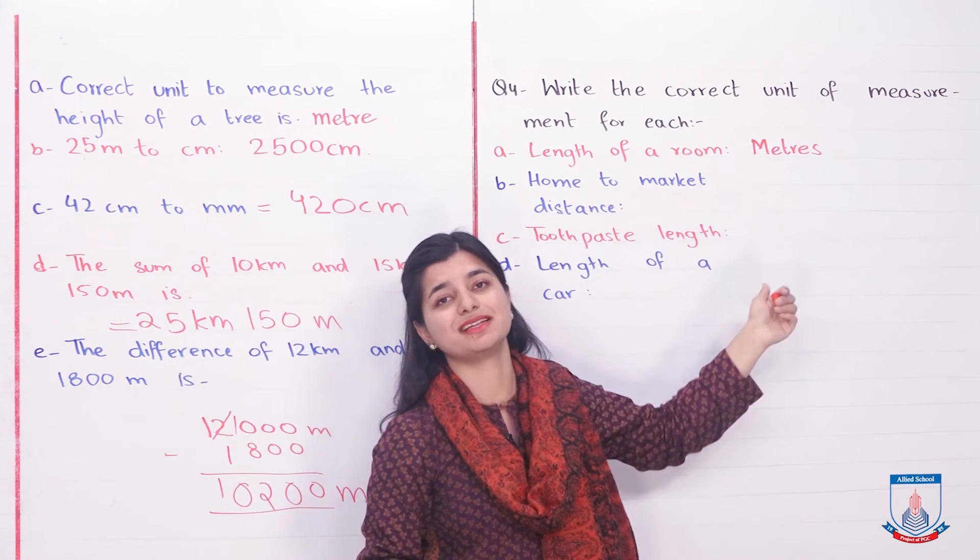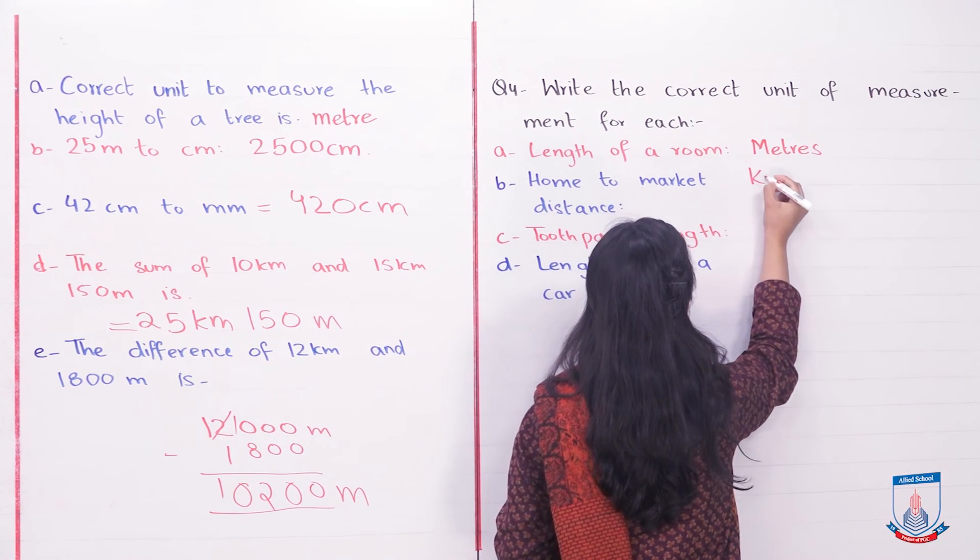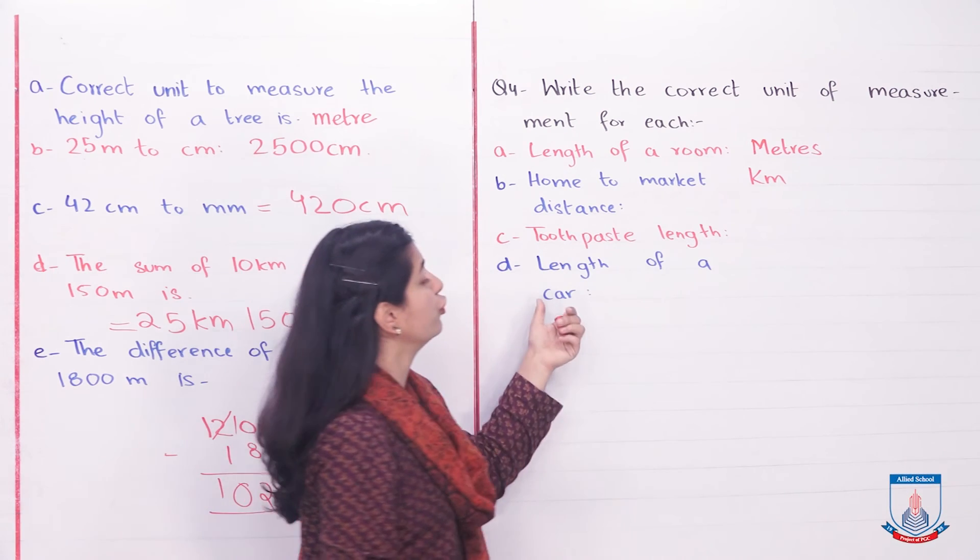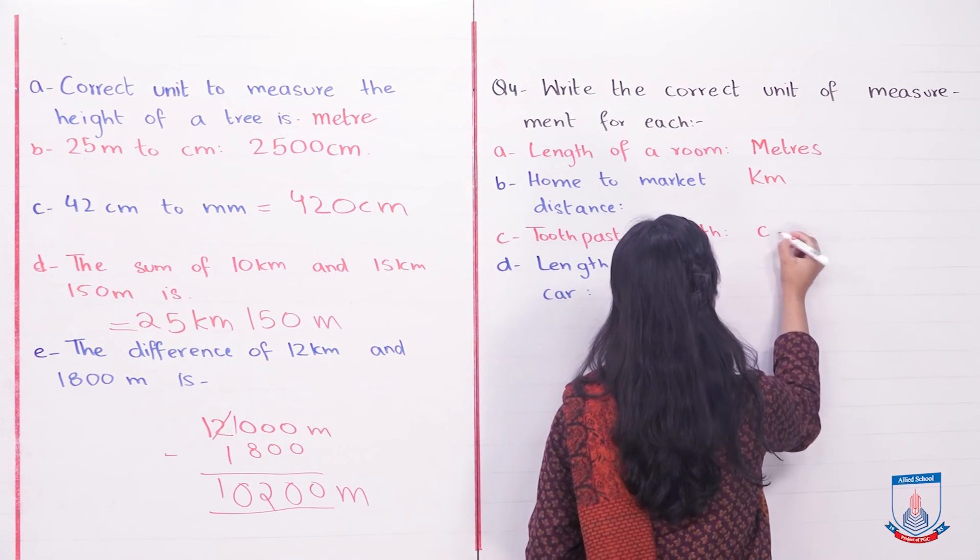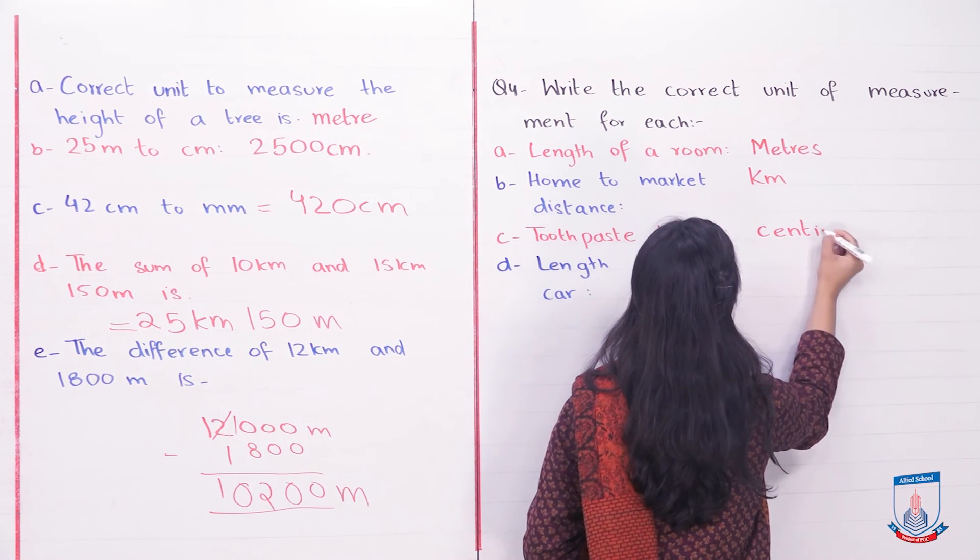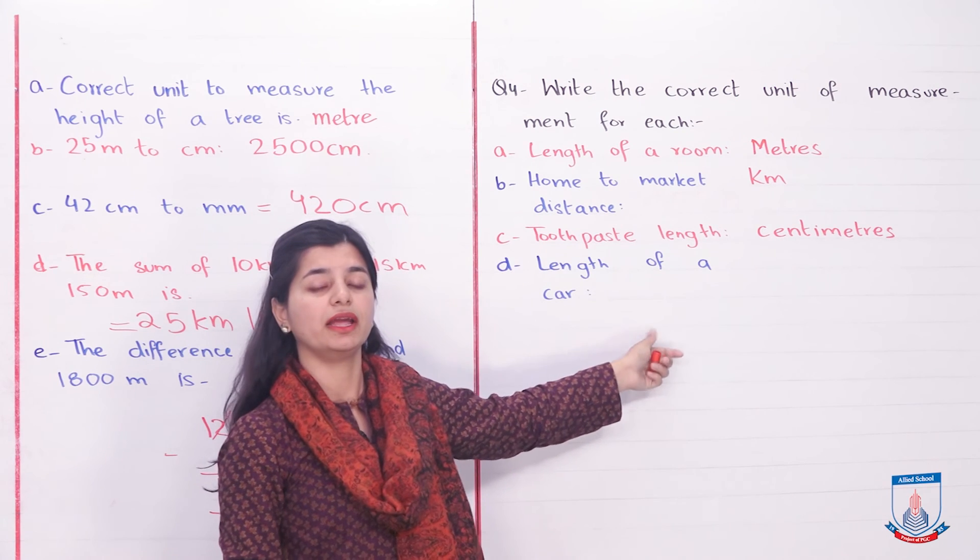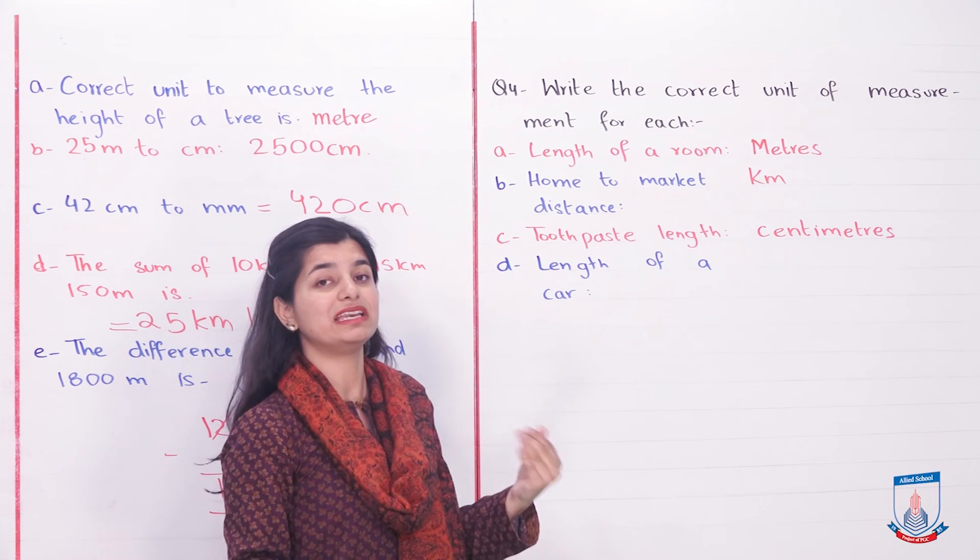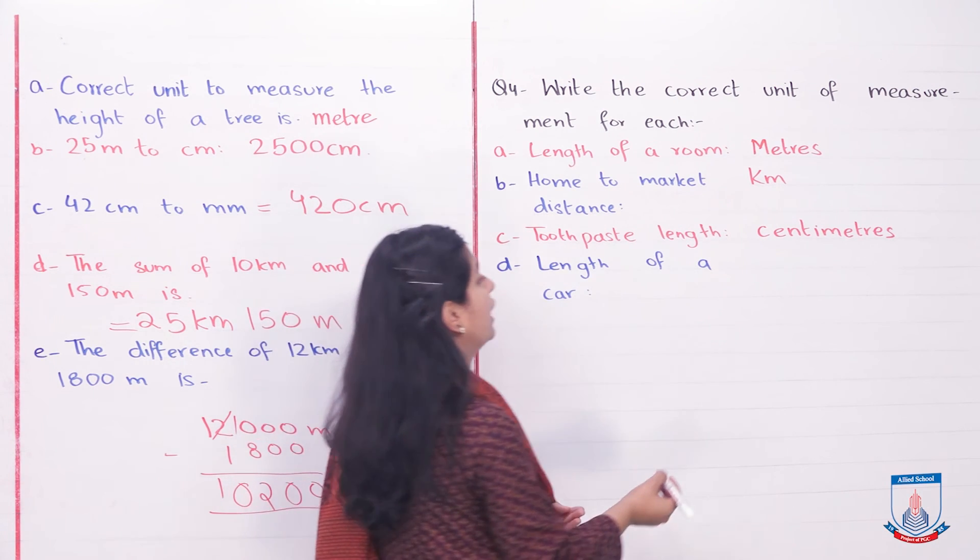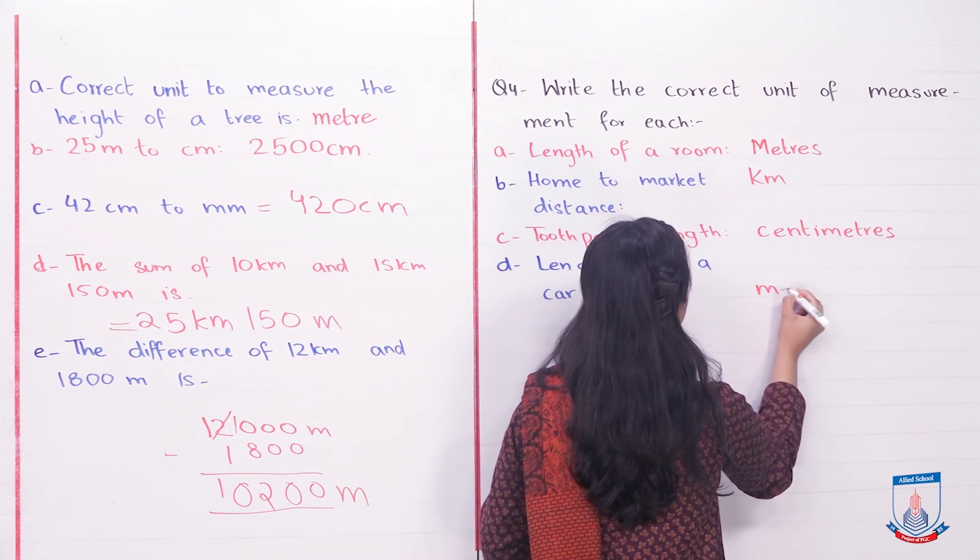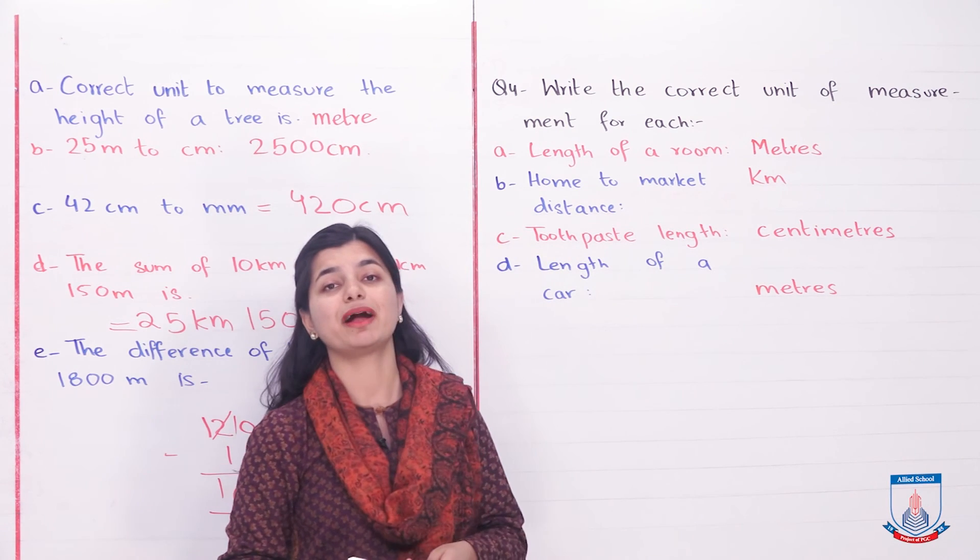Part C: toothpaste length. You can measure it in centimeters because it is a small length. Part D: length of a car. Do you measure a car by centimeter? No. By kilometer? No. So you can use meters over here as well.